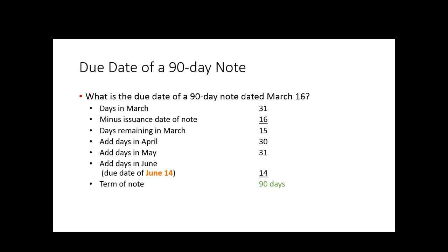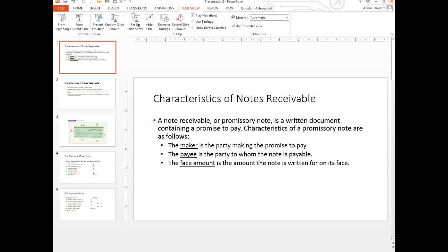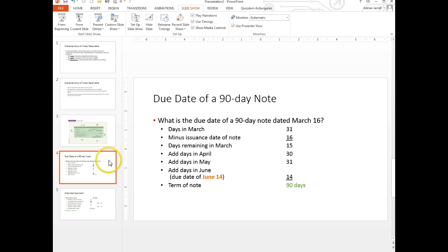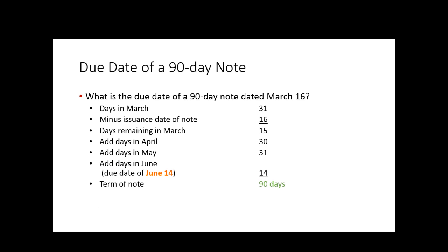Let's figure out the due date of a note. The due date is June 14th and the issuance date is March 16th. What you do - we've practiced this before - you take the number of days in the month and subtract the issuance date, giving the number of days remaining in the month. So 15 days in March, 30 days in April, 31 days in May, then 14 more days in June - add it all up and you get 90 days. Now we're going to go to the back of the chapter and look at problem 9-4B on page 442.